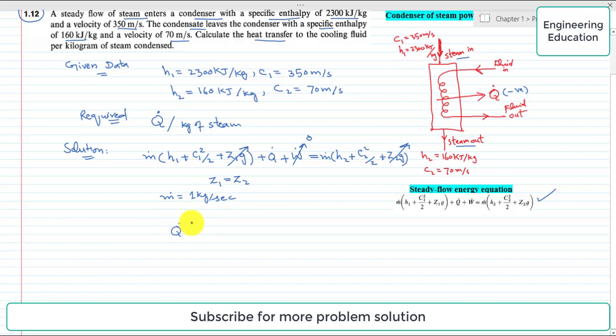So Q̇ is equal to (h₂ - h₁) + (c₂² - c₁²)/2. This term will be cancelled.